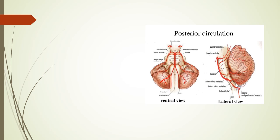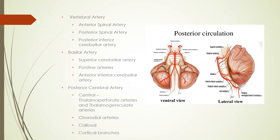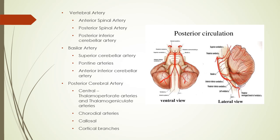The lateral view of the circle of Willis is a little easier to understand. From these branches, you can see the areas of the brain that may be affected by an infarct in one of the vertebral, basilar, or posterior cerebral arteries.